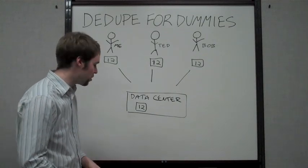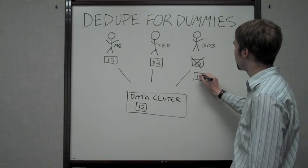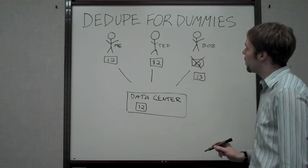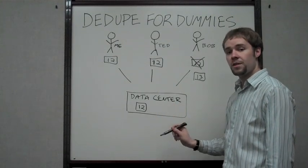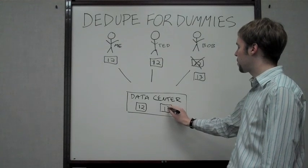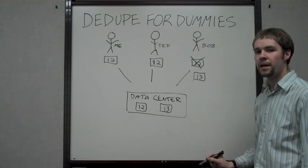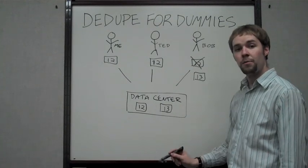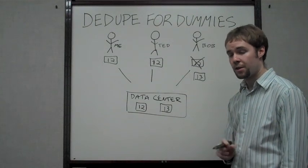Say Bob changes his up and has instead of 1-2, he has 1-3. When Bob backs up, it's not going to be the same as this version. So, the file-level deduplication means that the data center now has to protect a whole new version that protects 1-3. When Bob goes to restore that file, he gets back his 1-3, but if Ted or I want to restore the file, we get back our 1-2. That's file-level deduplication.